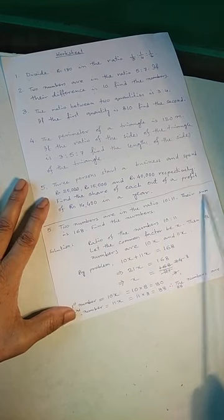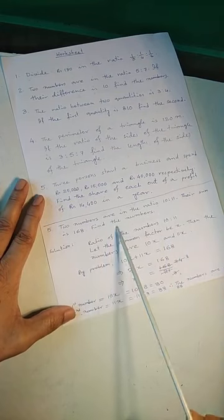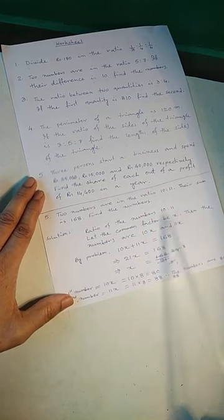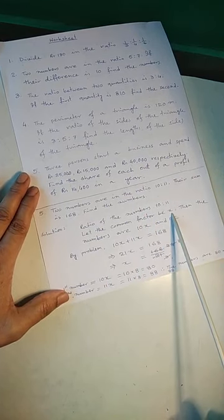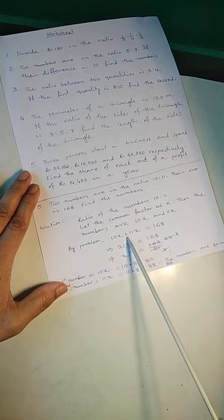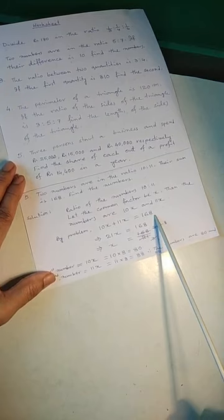Here another sum I am showing. Two numbers are in the ratio 10 is to 11. Their sum is 168. Find the numbers. So ratio of the numbers 10 is to 11. Let the common factor be X. Then the numbers are 10X and 11X. By problem, 10X plus 11X equal to 168.